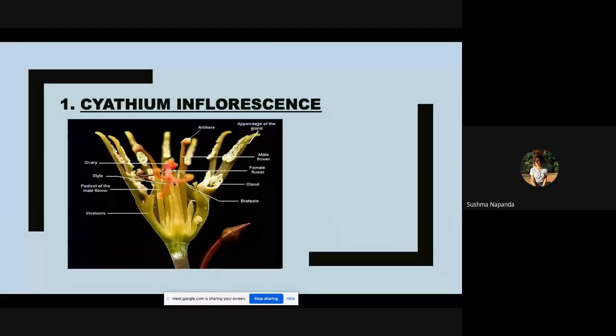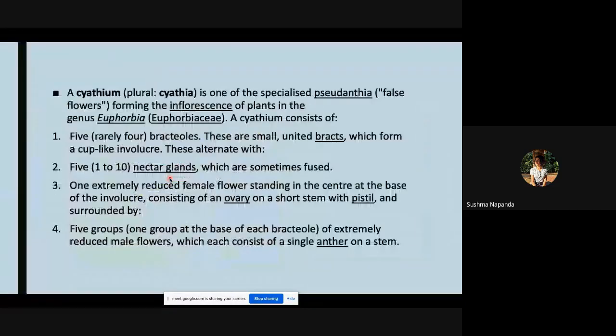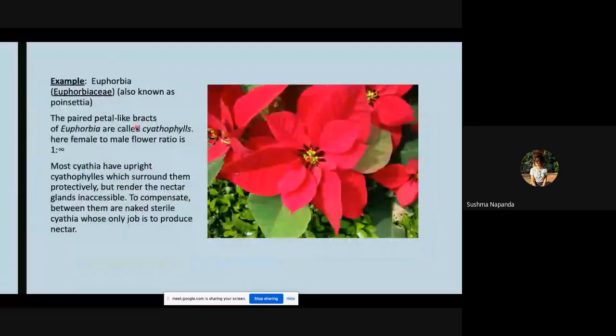This is Euphorbia. A paired petal-like bracts of Euphorbia are called cyathophylls. Here the female flower to male flower ratio is one to infinity. Most cyathia have upright cyathophylls which surround them protectively but render the nectar glands inaccessible.